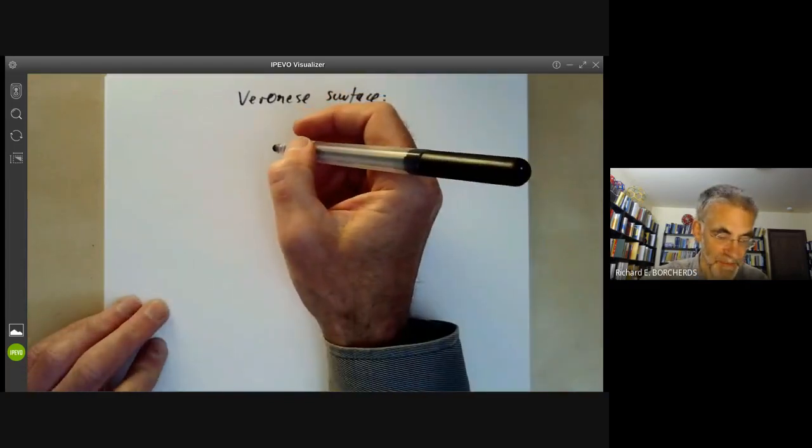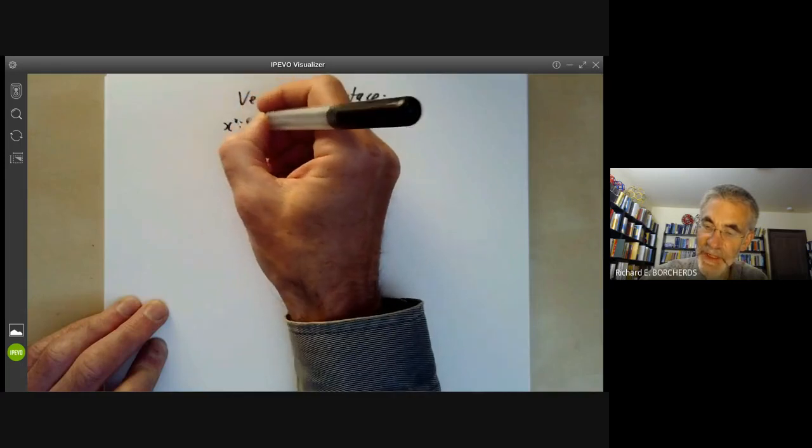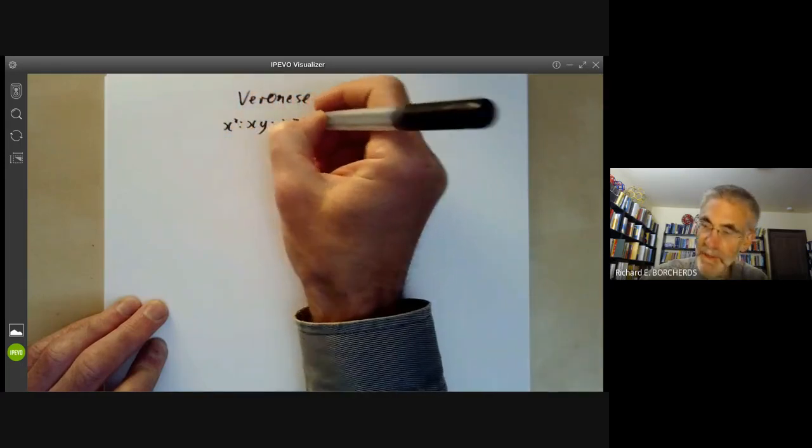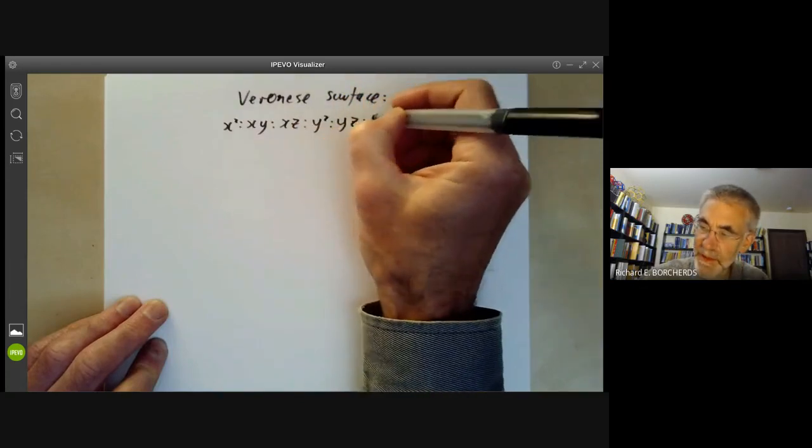This consists of all points in five-dimensional projective space in the form x squared, xy, xz, y squared, yz, z squared.